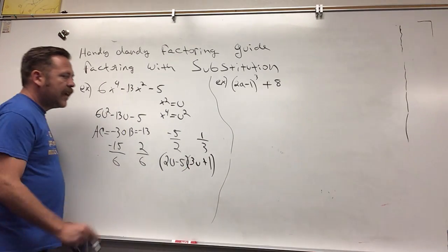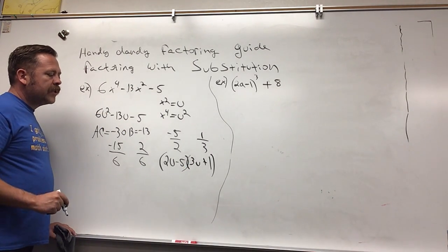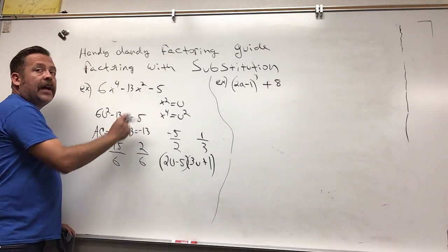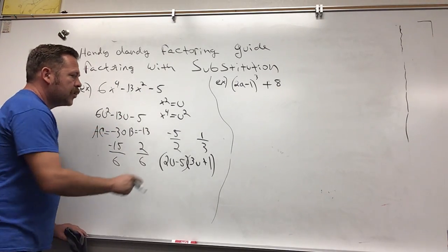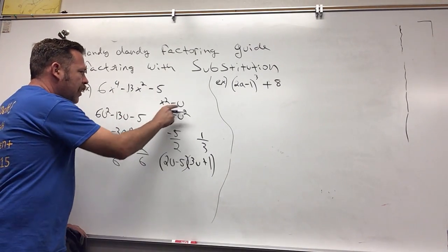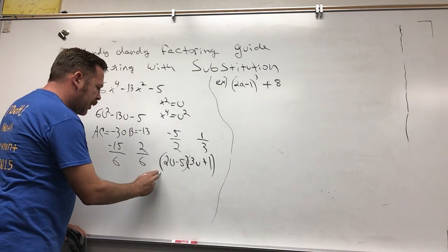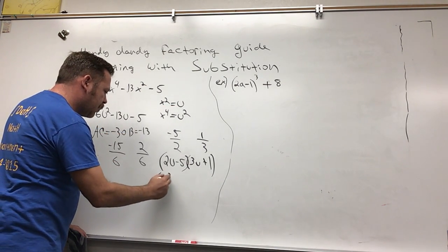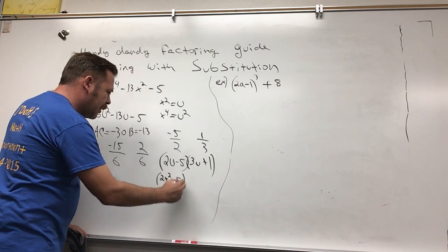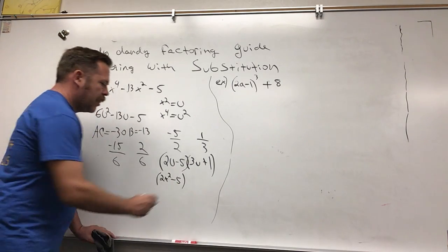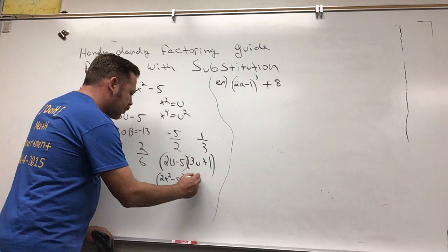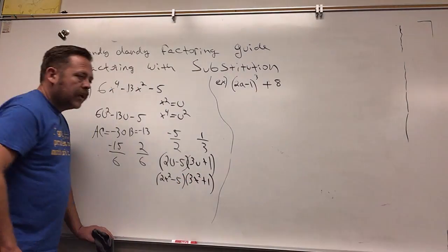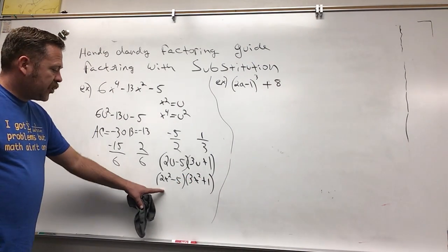And that's factored, but the only problem is we need it factored in terms of x, not in terms of u. So I'm going to substitute back, replace the u with x squared. So I have (2x² - 5)(3x² + 1), and there we have it.